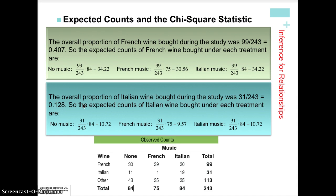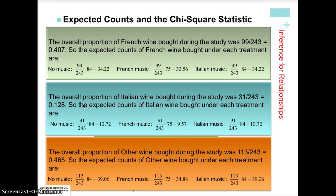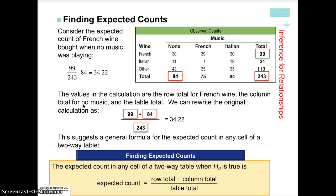Here you can see the conditional distributions of each treatment and how much wine was purchased for each type. Jot these down if you haven't already. Here you can see detailed instructions on how to find those expected counts — once again it's row total times column total divided by grand total.